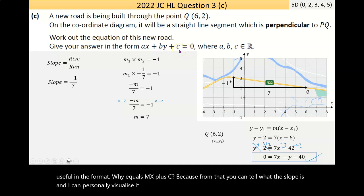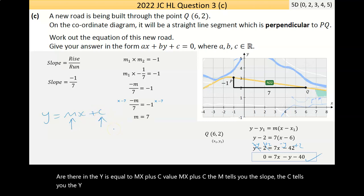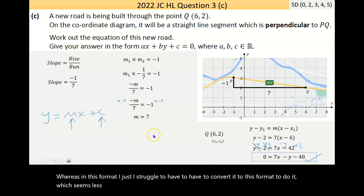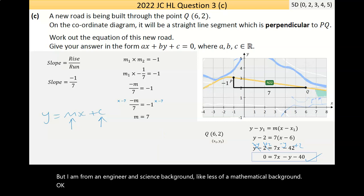Personally, I don't like this format. I think it's more useful in the format Y equals MX plus C, because from that you can tell what the slope is. The C value tells you the Y intercept. I can visualize what the line will look like in that format. Whereas in this format, I struggle, I have to convert it.